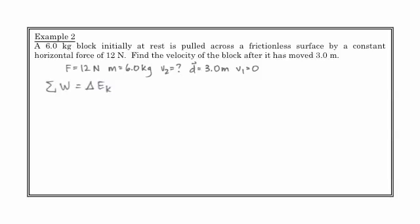First of all, let's explicitly write what the change in kinetic energy is. It's 1/2 mv2 squared minus 1/2 mv1 squared. And we know that v1 is equal to zero, so it just goes away. We also know that work, and in this case there's only one force that's providing one little bit of work. Work is equal to force times displacement. And that's equal to 1/2 mv2 squared.